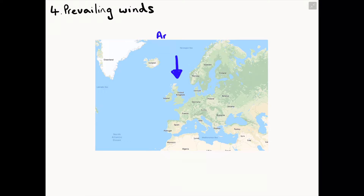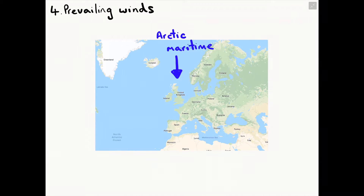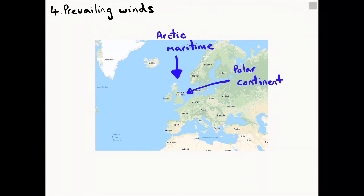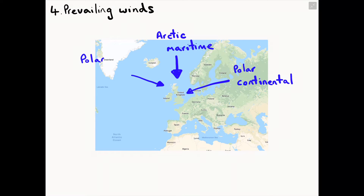The first is the Arctic Maritime air mass, which travels from the Arctic over a body of water. It is wet, cold air which brings snow in winter. The polar continental air mass travels over land from Central Europe; when warm it brings dry summers, but when cold it brings snow in winter. The polar maritime air mass travels from Greenland and the Arctic Sea over water, bringing wet, cold and showery weather.